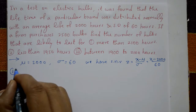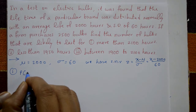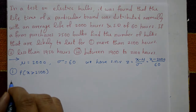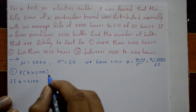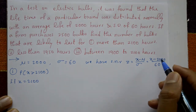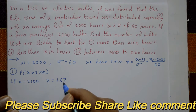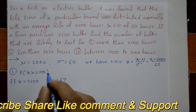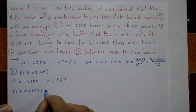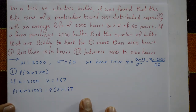Case 1: more than 2100 hours. We need to find probability of x greater than 2100. Taking x = 2100, z = (2100 - 2000) / 60 = 100/60, which is approximately 1.67. So we find probability of z greater than 1.67.